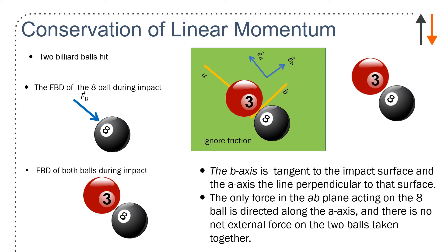B axis is tangent to the impact surface. A axis is the line perpendicular to that surface. The only force acting on the A-B plane acting on the 8th ball is directed along the A axis, and there is no net external force in the balls taken together. Now, this is one of those tricky things that you do have to spend a bit of time thinking about. But the important point here is that this is a zero impulse, not because it necessarily has to take place over zero time. That's another question.